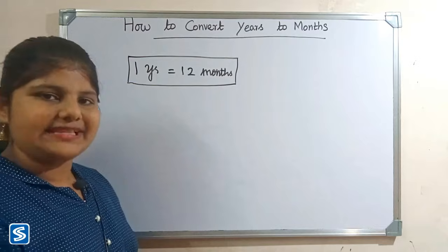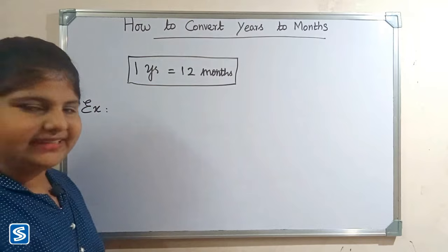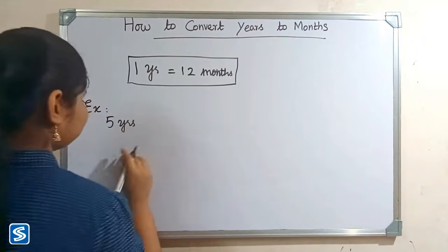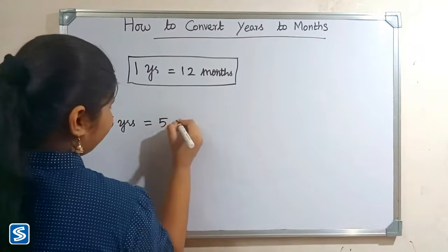Now we will take some examples. For example, we can take five years. Five years can be written as five multiply one year.